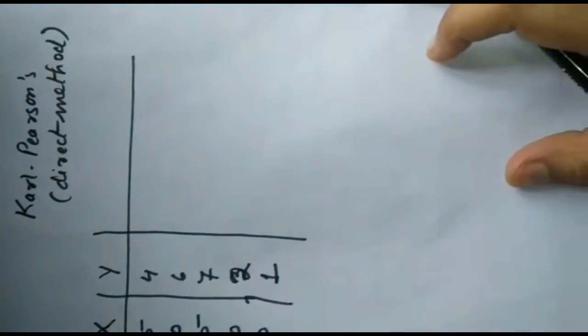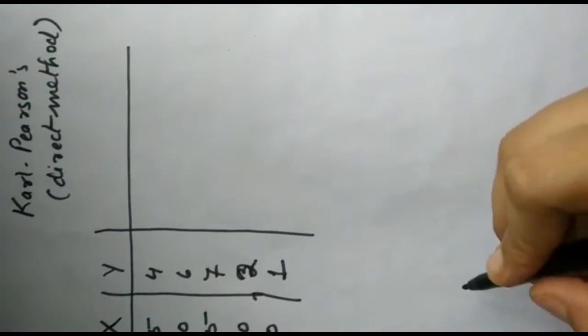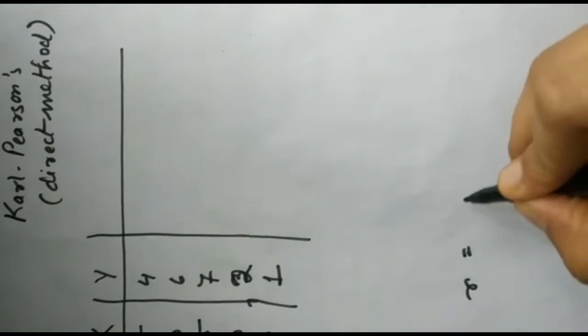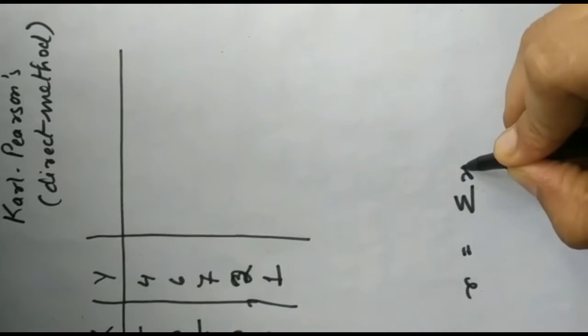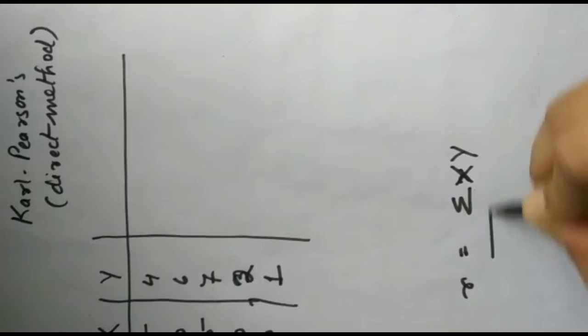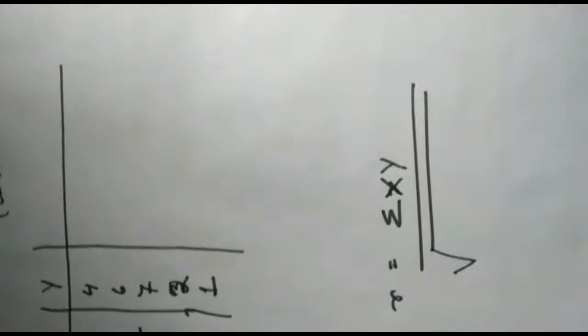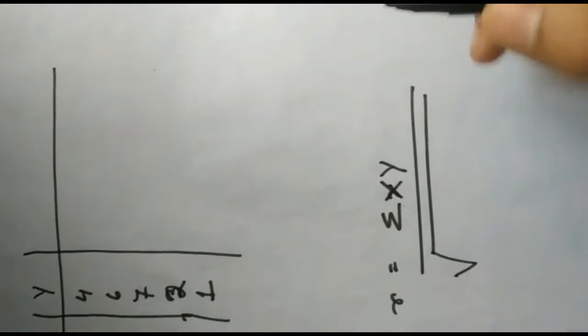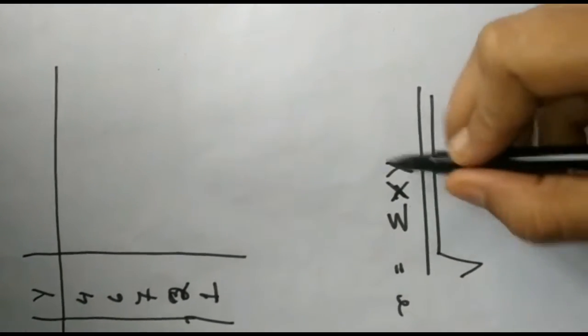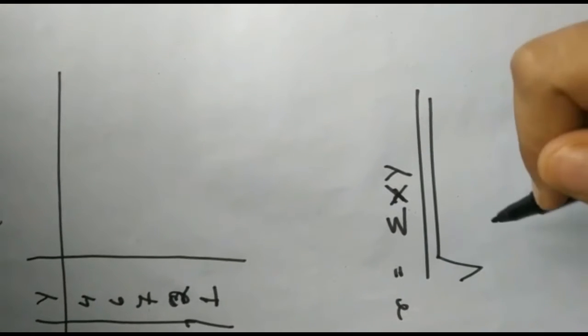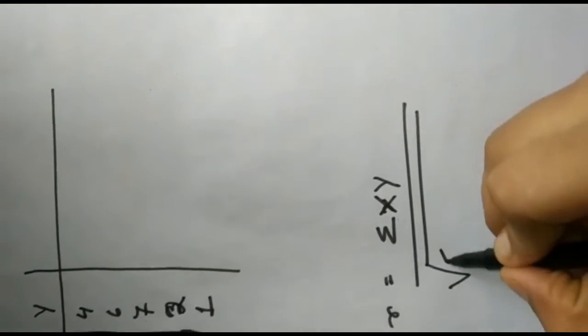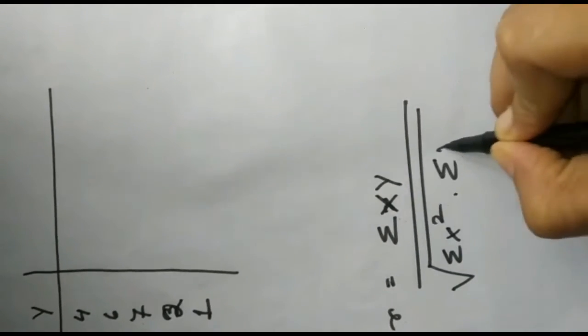Now, what is my formula of direct method? R equals to sigma xy divided by root over, which I missed in your previous video. Sigma xy divided by root over sigma x square into sigma y square.